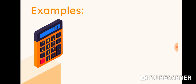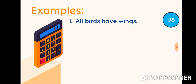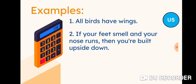Statements don't have to deal only with mathematical content — we can also have different sentences. For example: all birds have wings, which is true for all birds, making it an example of a universal statement. Next: if your feet smell and your nose runs, then you're built upside down — this is an if-then statement, so it is an example of a conditional statement.